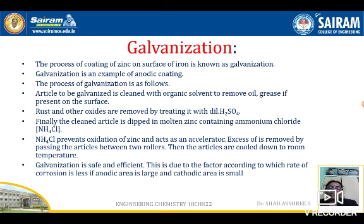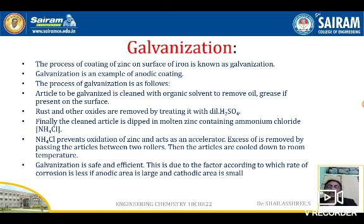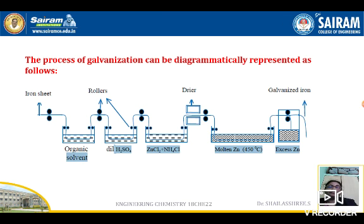Galvanization is safe and efficient because the rate of corrosion is less when the anodic area is large and the cathodic area is small. When zinc is coated on iron and a small area gets damaged or peeled off, a larger anodic area and a smaller cathodic area are formed, so the rate of corrosion will always be lesser. The galvanization process involves: cleaning with organic solvent, treating with dilute acid, coating with zinc chloride and ammonium chloride, dipping in molten zinc at 430–475°C, and removing excess zinc with rollers.